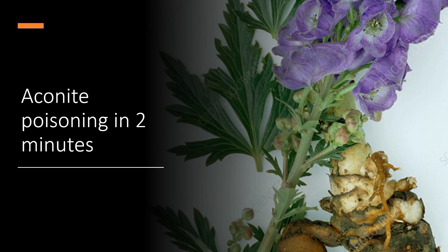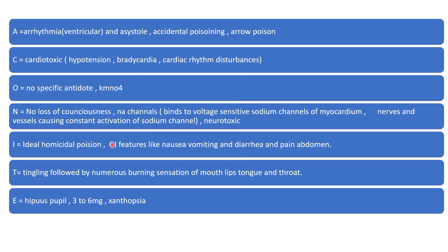I have made a very easy mnemonic for aconite poisoning, which is A-C-O-N-I-T-E — the mnemonic is the topic itself, that is ACONITE. So 'A' stands for the cause of death in aconite poisoning, which is arrhythmia and ventricular arrhythmia and asystole.